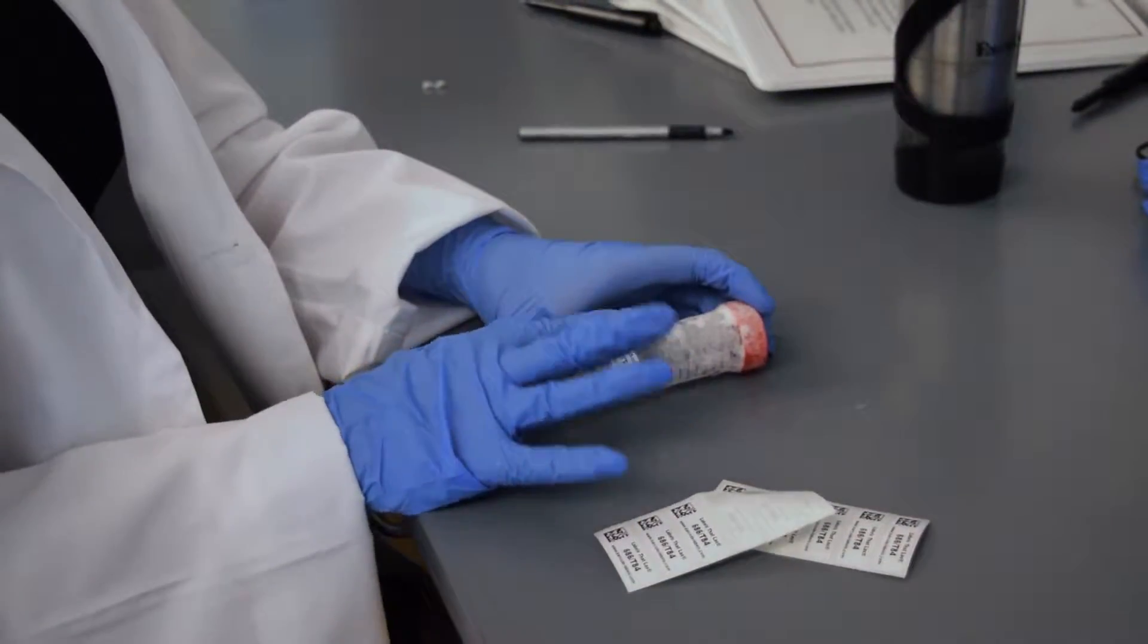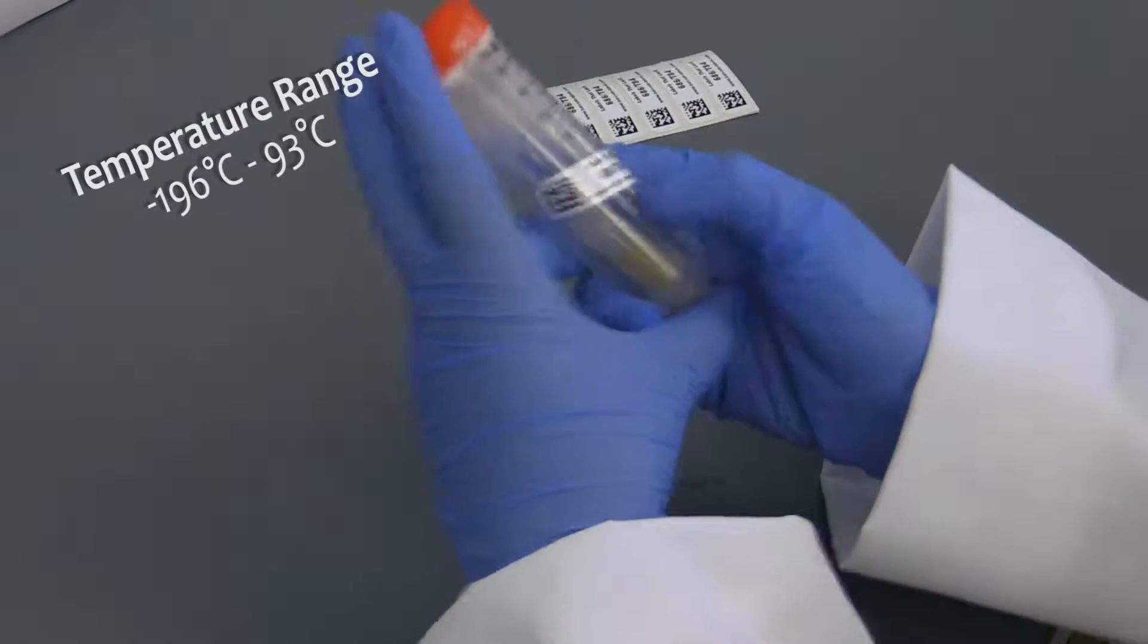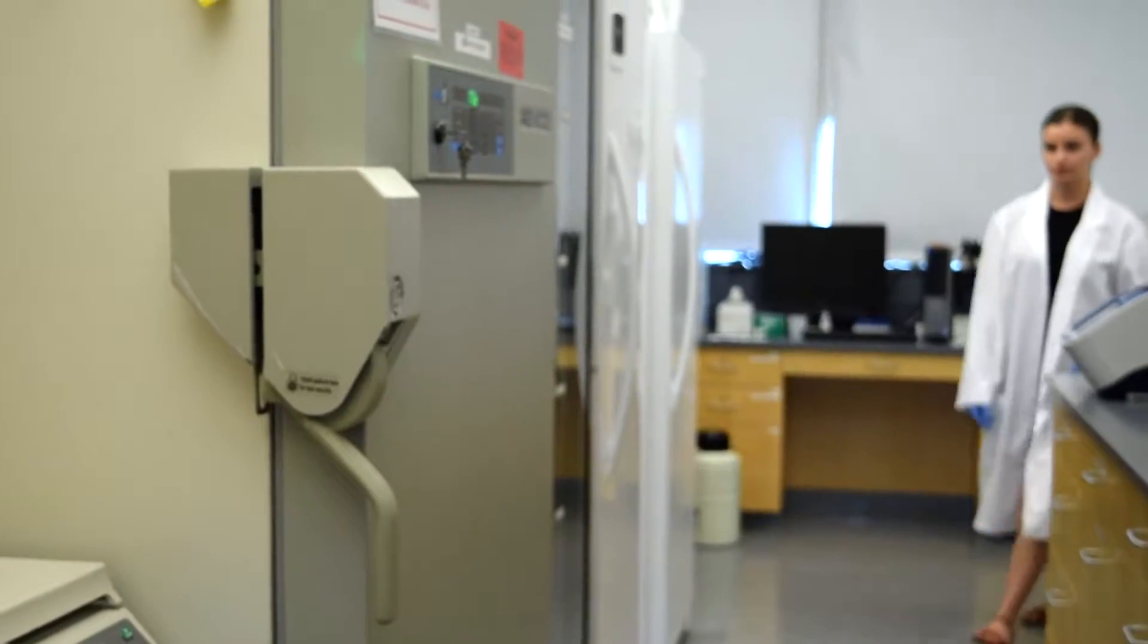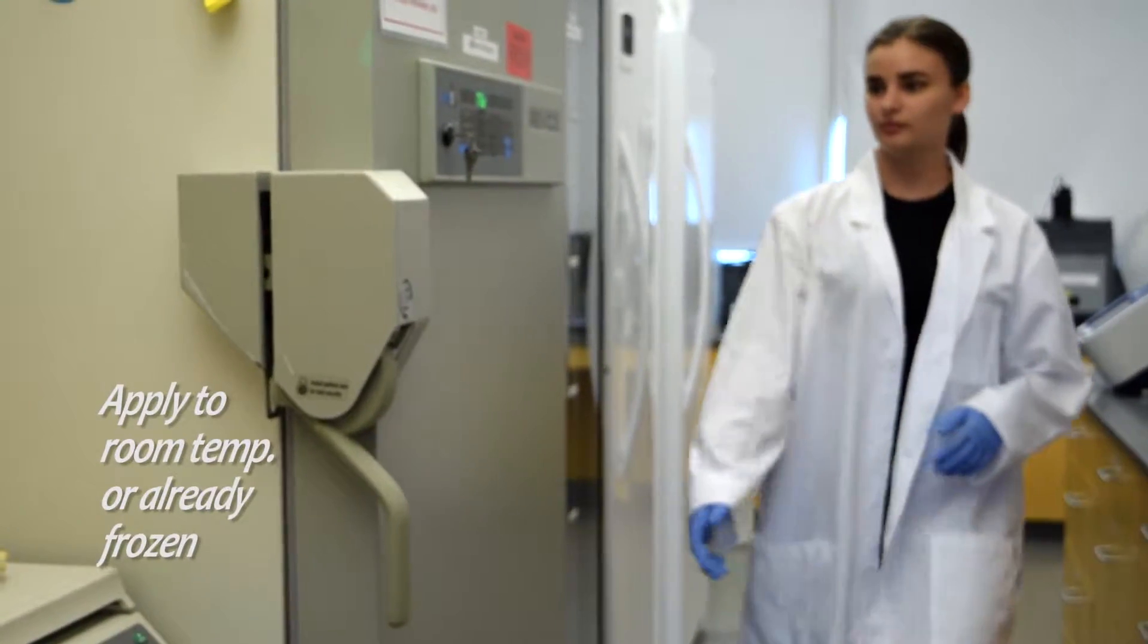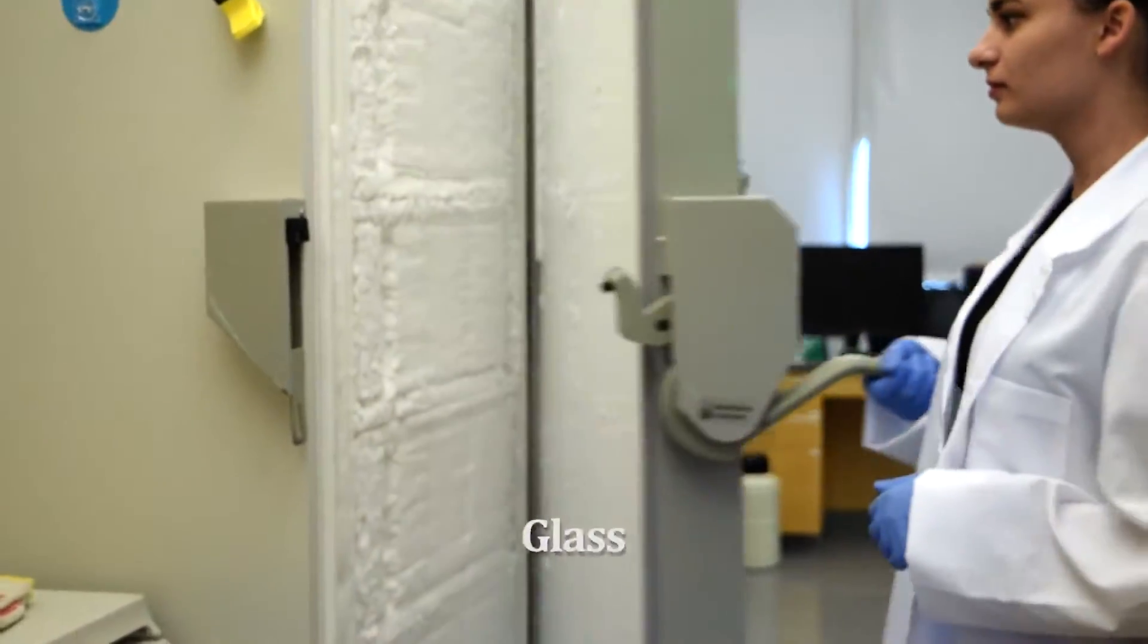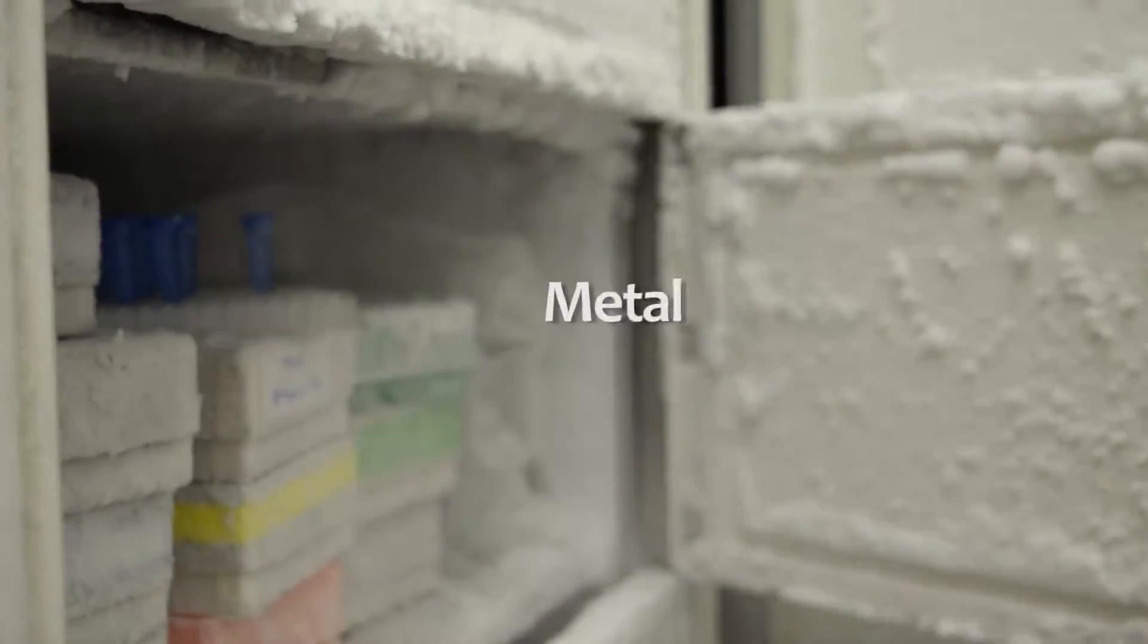Cryolabels can be used on containers that are stored as low as negative 196 Celsius. They can be applied to regular or already frozen containers, and they work with glass, plastic, polypropylene, and metal surfaces.